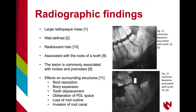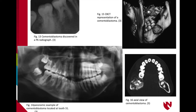Radiographic effects include root resorption, bony expansion, tooth displacement, obliteration of PDL space, loss of root outline, and invasion of the root canal. Figures 11 and 12 both show cementoblastomas associated with mandibular left first molars. Figures 13 through 16 are also radiographic examples. Figure 13 shows a cementoblastoma associated with tooth 19, causing the roots to become almost indistinguishable. Figure 14 shows a panoramic example at tooth 31. Figure 15 shows a CBCT representation, and Figure 16 shows the same lesion from the axial view.